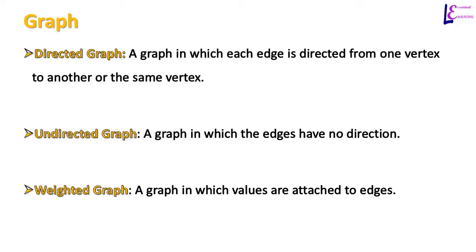There are three kinds of graph: a directed graph, an undirected graph, and a weighted graph. In a directed graph, edges show direction from one node to another. In an undirected graph, edges simply connect vertices but do not show direction from one vertex to another. In a weighted graph, values are attached to the edges. These values may represent, for example, distance between cities, time of travel, or some other factor between vertices.